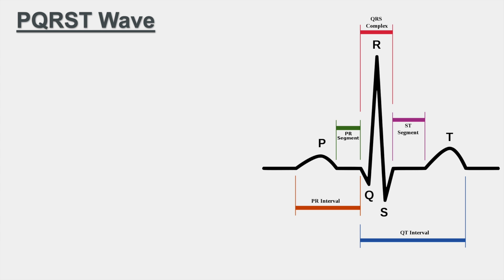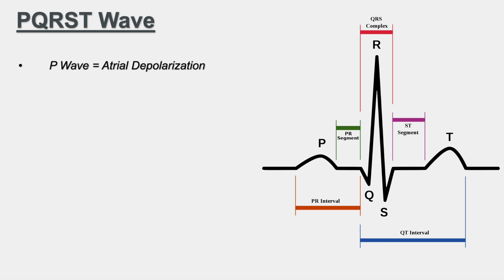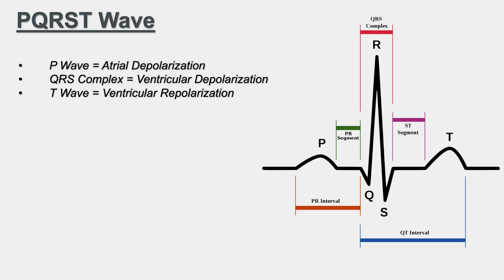Next we'll move on to the PQRST wave — commit this to memory. We have the P wave first, then a downward Q wave, an upward R wave, a downward S wave, and generally an upward T wave. The P wave denotes atrial depolarization. The QRS complex denotes ventricular depolarization, and the T wave generally denotes ventricular repolarization. In some cases you may also see a U wave, thought to be due to Purkinje fiber repolarization.